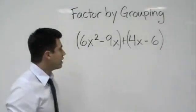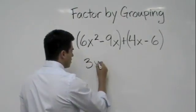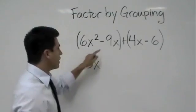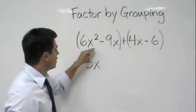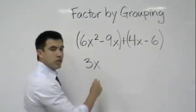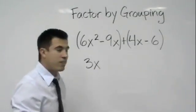The greatest common factor here would be 3x because we can take a 3 out of 6 and 9, and then we can take an x out of the variables. Remember, it's always the variable with the smallest exponent that will be the greatest common factor.